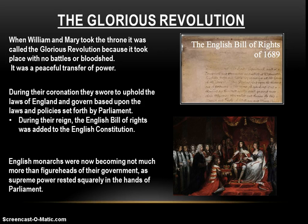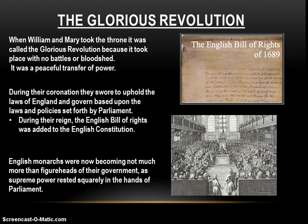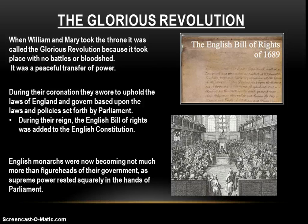During their reign, the first really big thing William and Mary do as the royal couple is sign the English Bill of Rights and add that to the English Constitution. What we're seeing now is the beginning of the process where English monarchs are becoming not much more than figureheads of their government, and supreme power is resting squarely in the hands of Parliament. After the Glorious Revolution, Parliament is clearly victorious in this long struggle for control — monarchs rule with the permission of Parliament, the king can't raise and keep an army without Parliament, Parliament passes all laws, and Parliament approves and collects all taxes. The party in control of Parliament would have its top leaders become the inner circle advisors of the king — called the cabinet of ministers — and the overall leader of the party in power was called the prime minister, a position that remains the leader of the English government today.